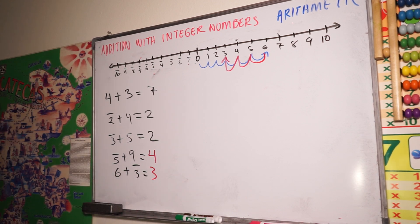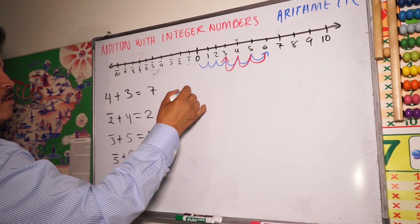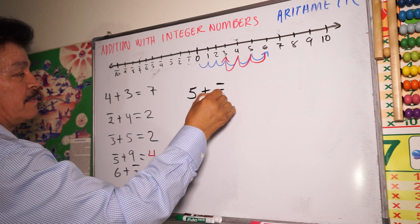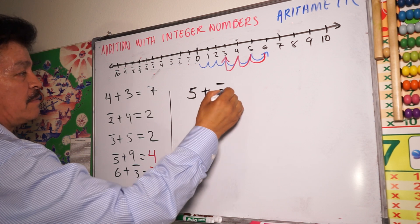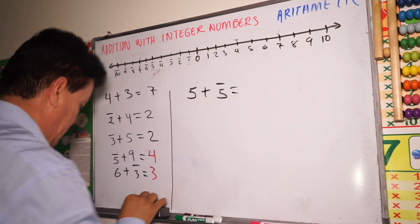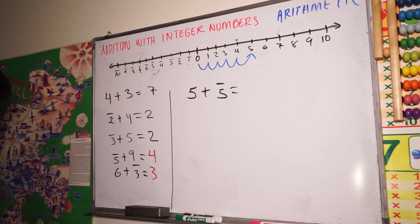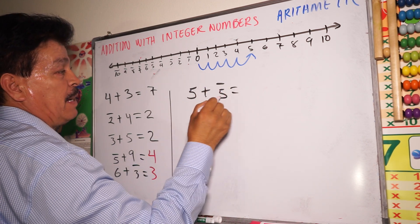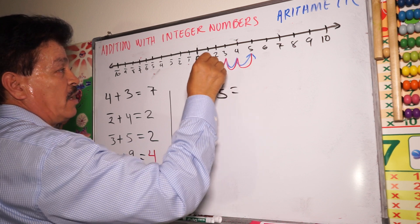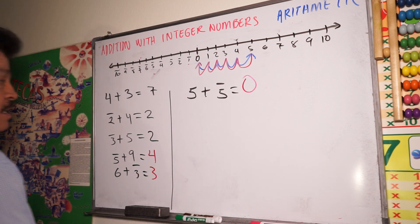Let's do more problems. For example, the symmetrical: five plus minus five. What is five plus minus five? You have five right here — one, two, three, four, five. Plus minus five — one, two, three, four, five. Zero. Zero. That's the symmetrical number.